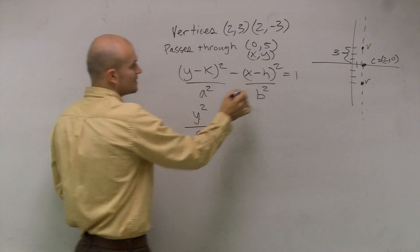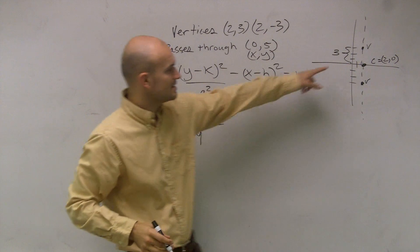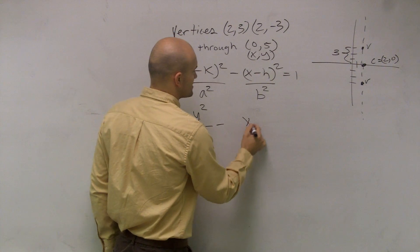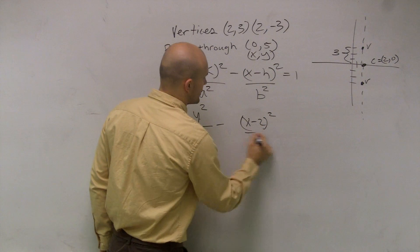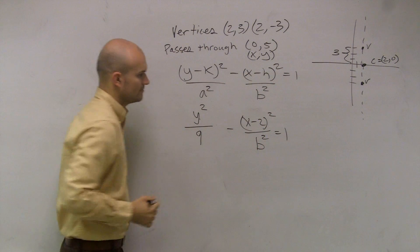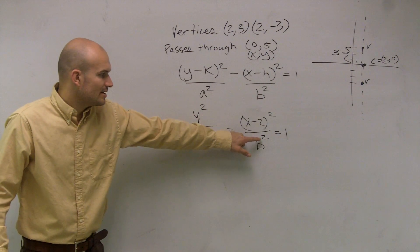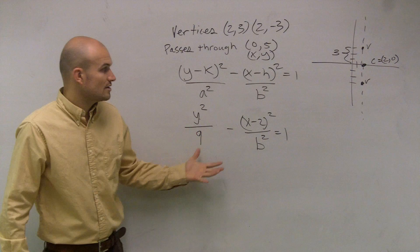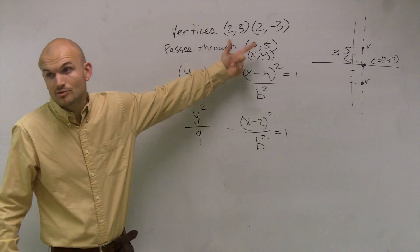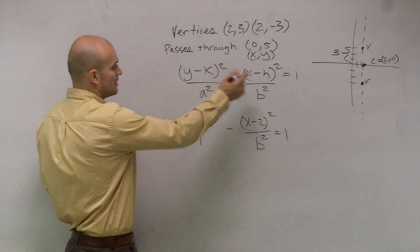x minus h is going to be, my h for my center is 2. So I have to write x minus 2 squared over b squared equals 1. Does everybody see what I did there? I don't know what my b squared is, and right now I have an unknown of an x and y. However, they told me it passed through (0,5). I can use that as my x and y coordinates to plug in.